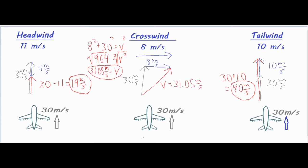I used the Pythagorean theorem: a² + b² = c², calling it V for velocity since it represents the hypotenuse of the triangle. I squared both values and added them together to get 964, then square-rooted both sides and got a final velocity of 31.05 meters per second.